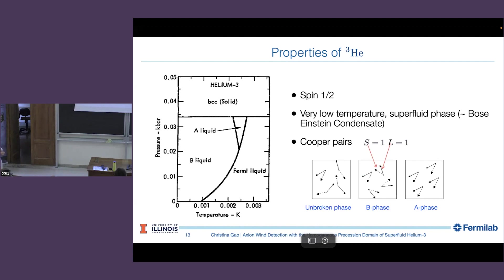Temperature is on the horizontal axis and pressure here. So here is the normal Fermi liquid. But if you're below a certain temperature, you enter the superfluid phase. It says B liquid here, and then there's a small section of A liquid.